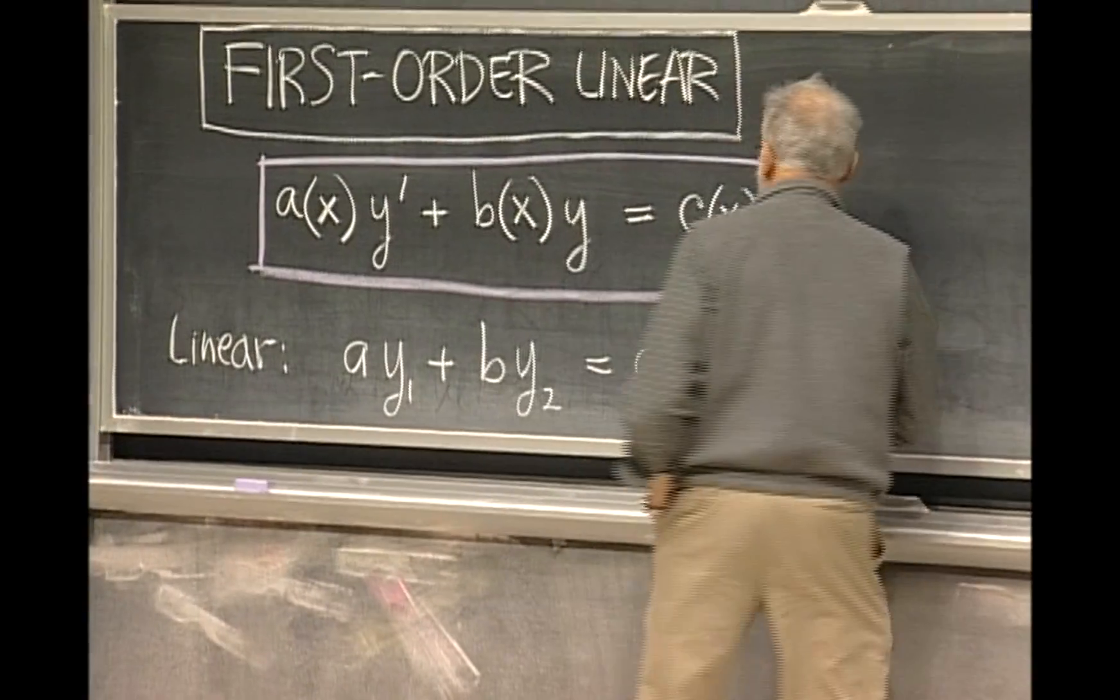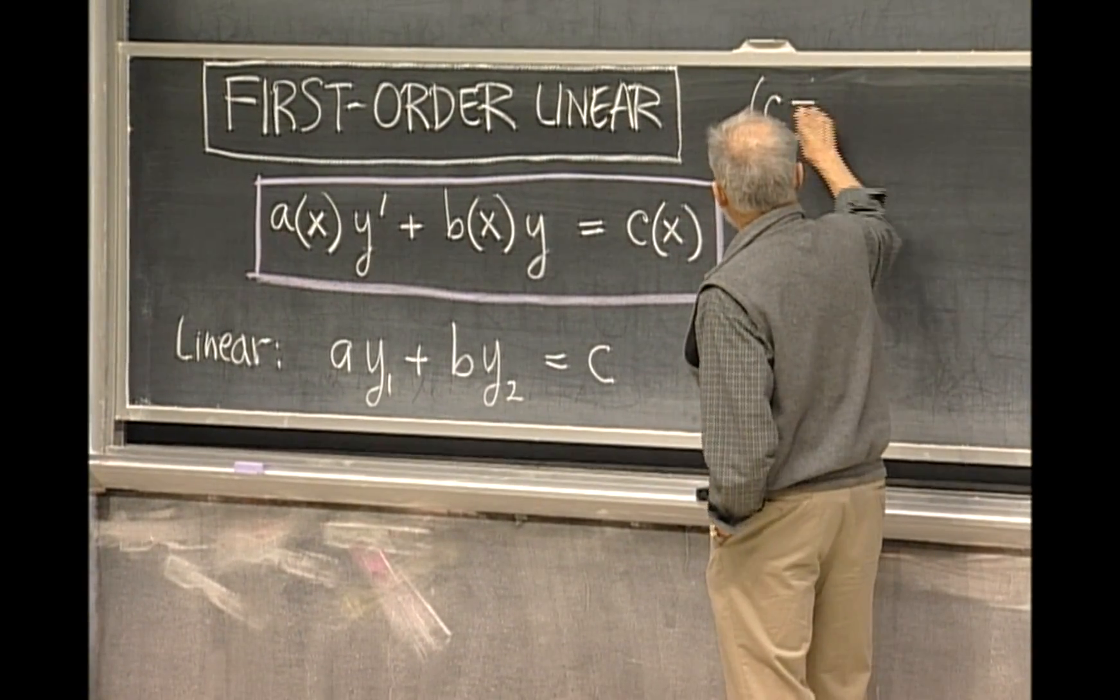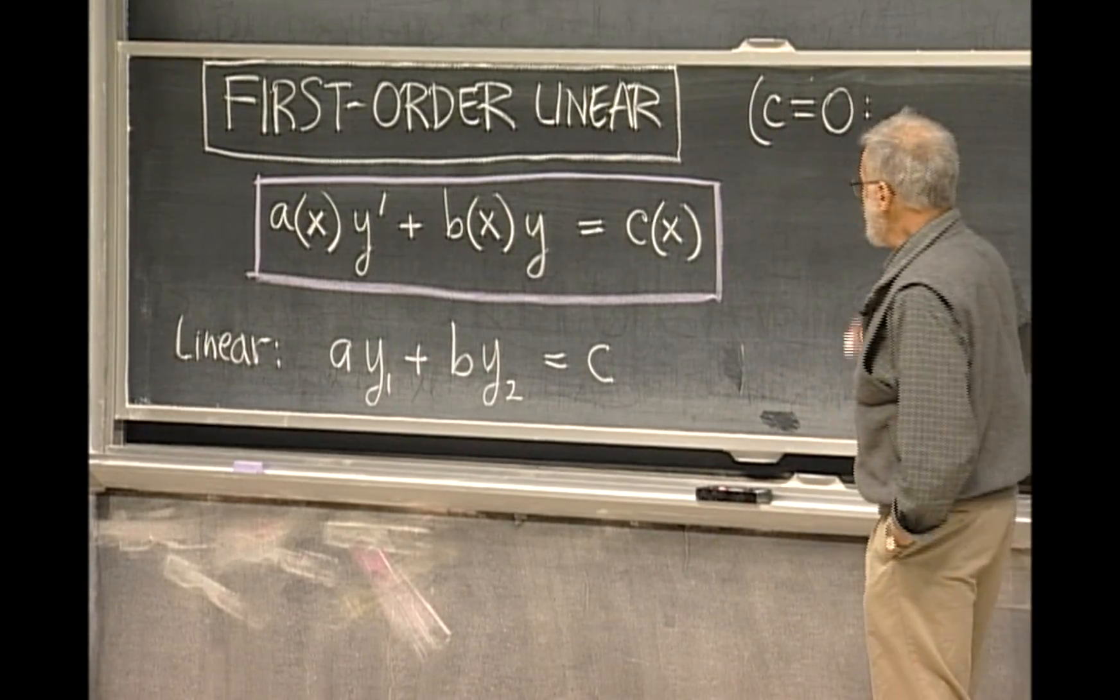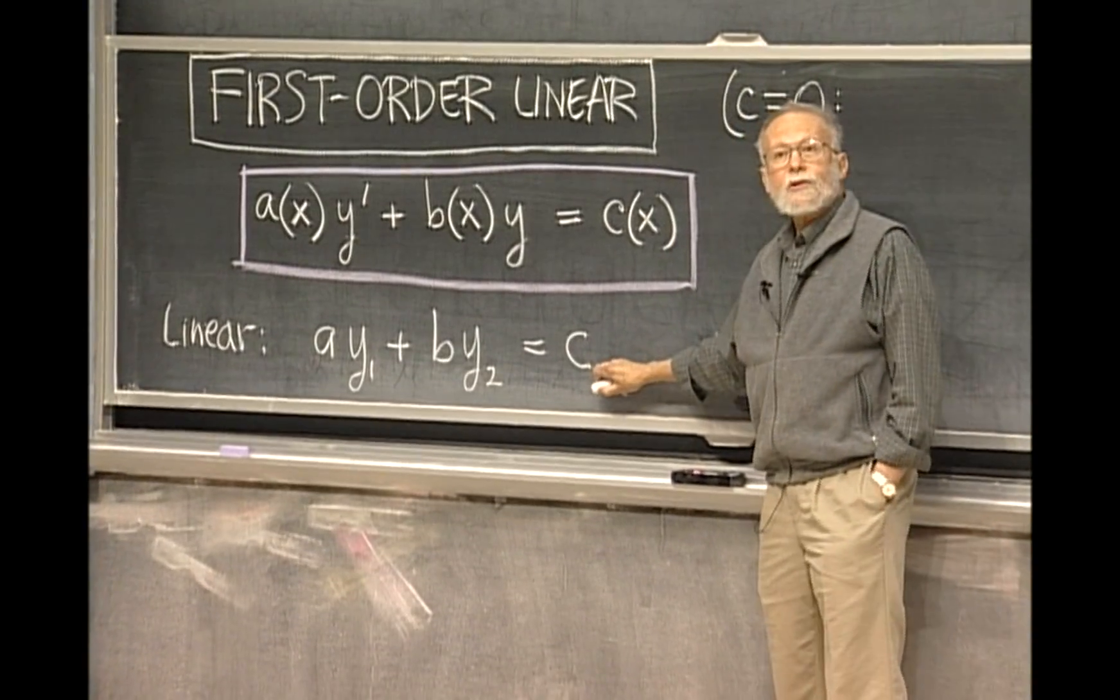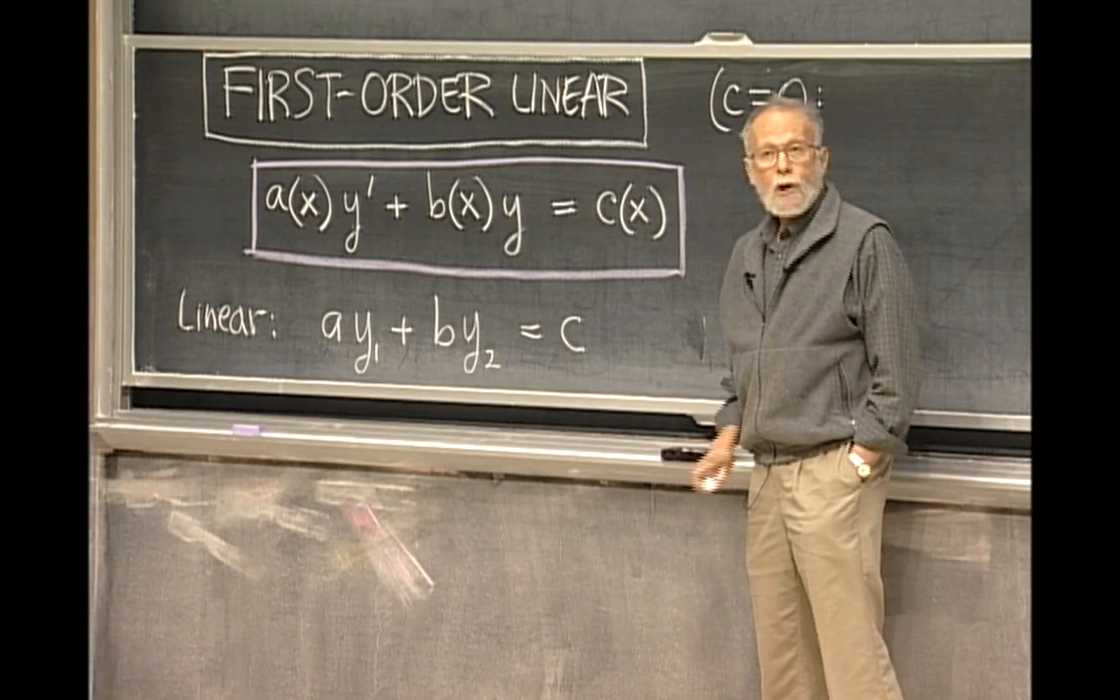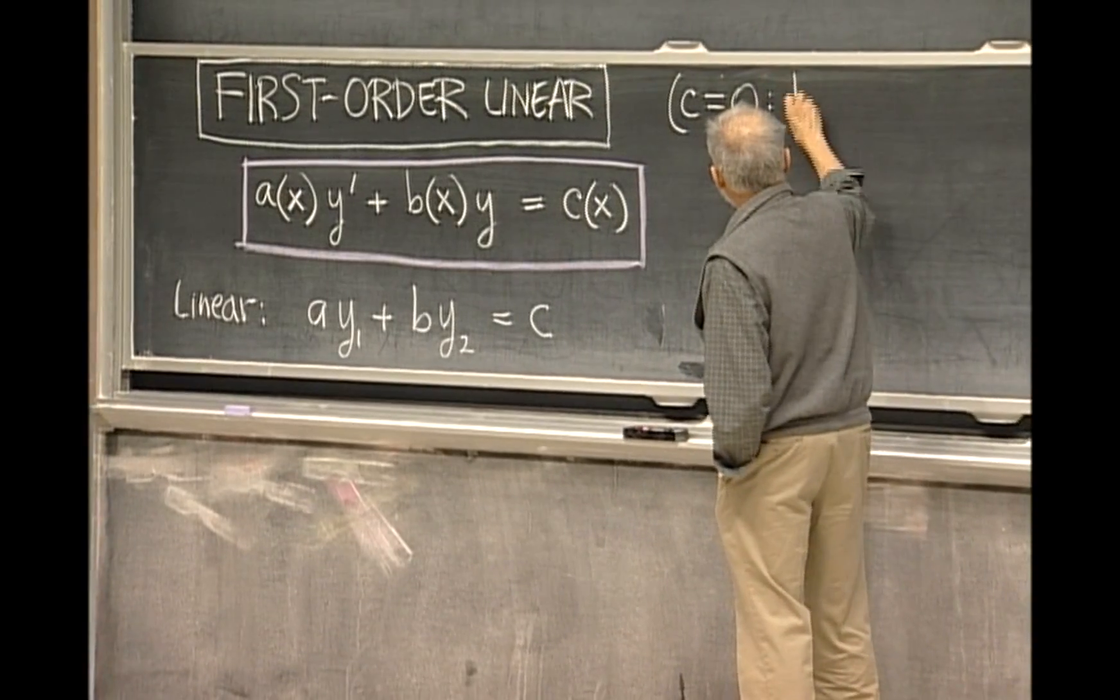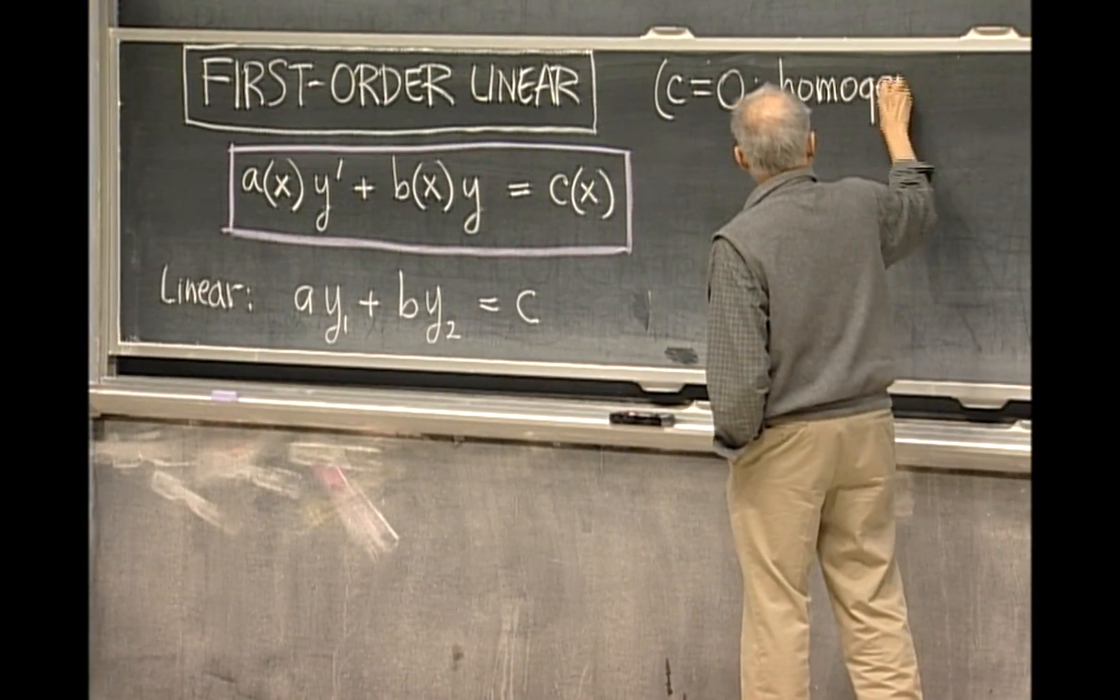A little bit of terminology: if c is equal to 0, it's called homogeneous, the same way this equation is called homogeneous, as you know from 1802, if the right-hand side is 0. That's called homogeneous.